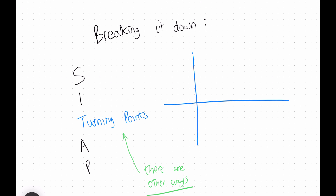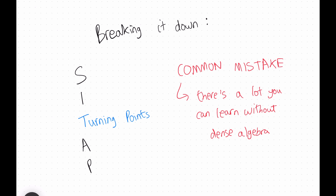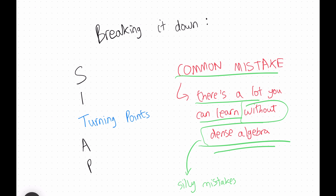Sometimes with the function you're given, you don't even know how to differentiate it, so don't make differentiating your first objective. Jumping straight into differentiation is a common mistake students make in interviews, because there's a lot you can learn about the shape of the function without it. Dense algebra can also lead to silly mistakes. Make sure you've gathered as much information as you can about the function before differentiating.